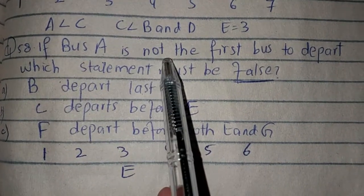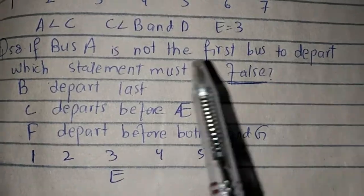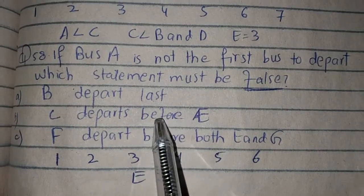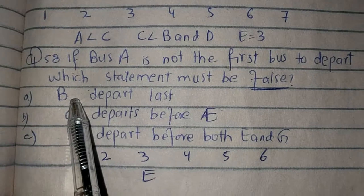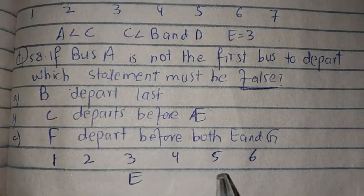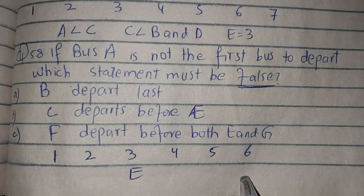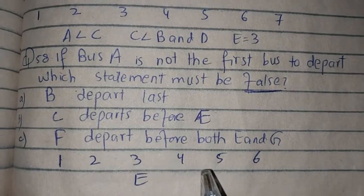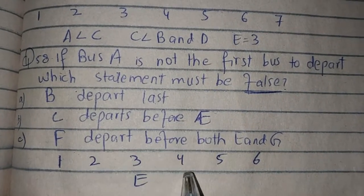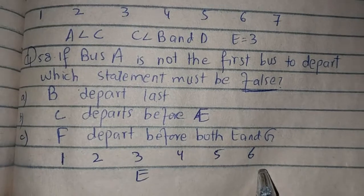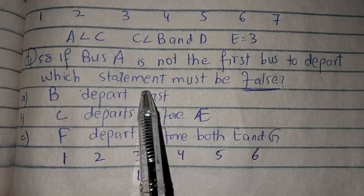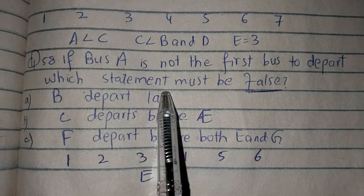If bus A is not the first bus to depart, which statement must be false? Ab in statements mein kaun si false hai? B departs last: E ko hum three pe rakhte hain, B ko agar hum six pe rakha, to B se pehle, D se pehle, C aur two pe A aa sakta hai. To A less than C ho jayega, aur C less than B and D — to option true ho jayegi. Lekin yeh option galat hai — statement true hai, to option galat hai.